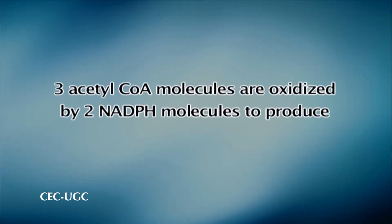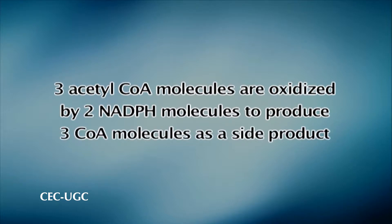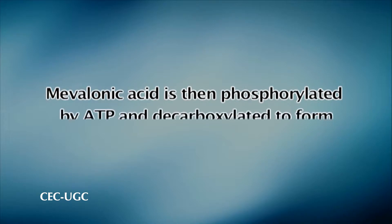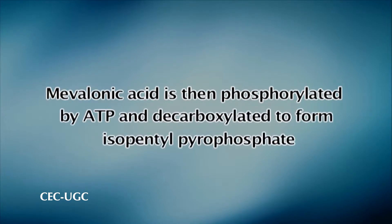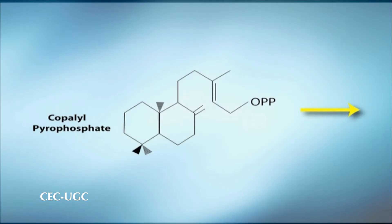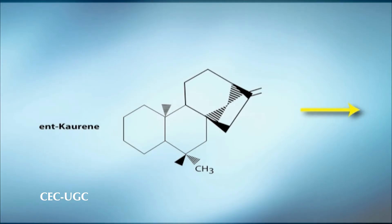The pathway by which Gibberellins are formed begins with three acetyl-coenzyme A molecules, which are condensed and then reduced by two NADPH molecules to produce mevalonic acid and three coenzyme A molecules as a side product. The mevalonic acid is then phosphorylated by ATP and decarboxylated to form isopentenyl pyrophosphate. Four of these molecules form geranylgeranyl pyrophosphate, which serves as a donor for all GA carbon atoms. This compound is then converted to copalyl pyrophosphate, which has two ring systems, and copalyl pyrophosphate is then converted to corine, which has four ring systems. Subsequent oxidation yields corinol, corinol, and corinoic acid respectively.